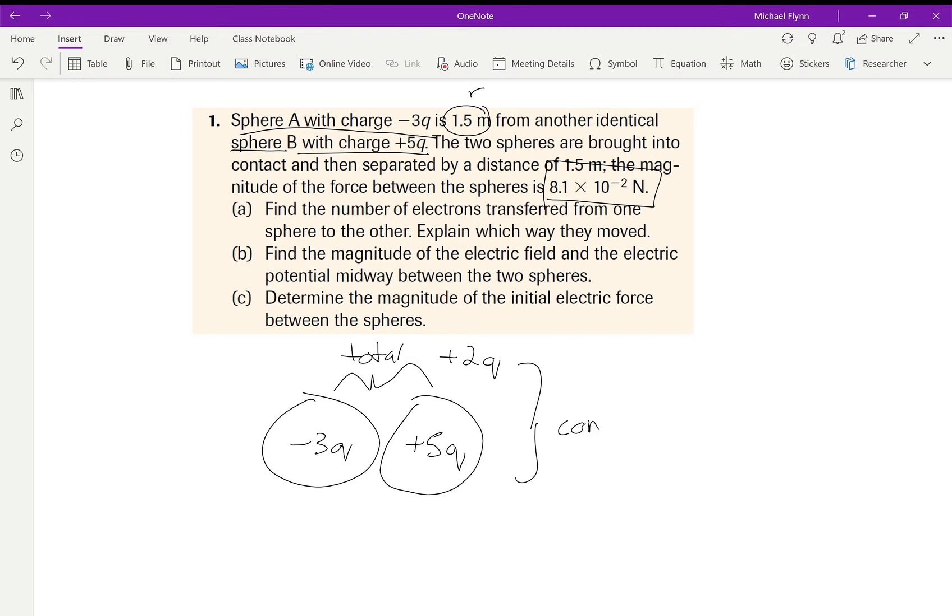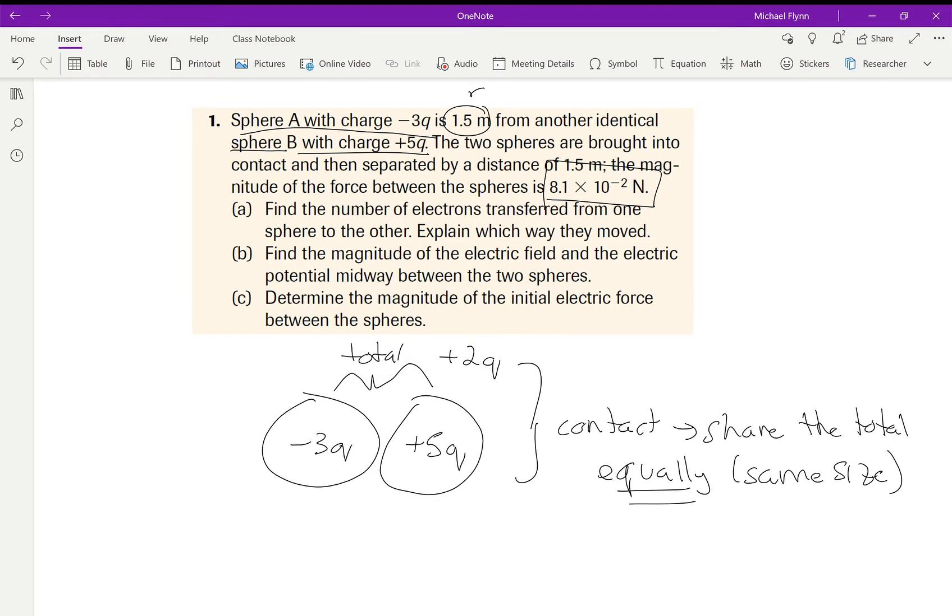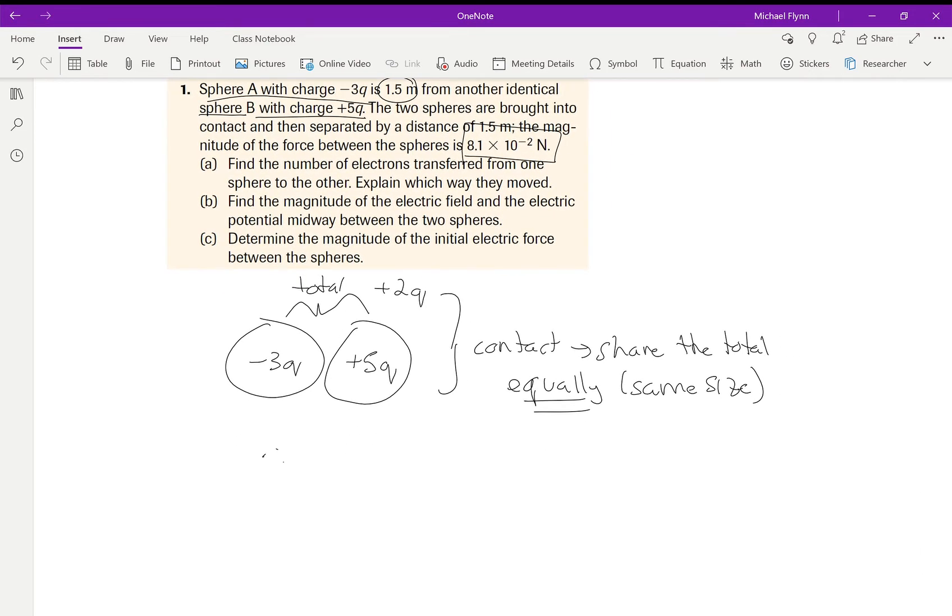So overall there's a total net positive charge. What happens when you charge by contact is they're going to share the total equally, and it's equally because they're the same size—they're identical spheres. If one was twice the size of the other, they wouldn't share them equally, but whenever you get a question like this it's always going to be equal.